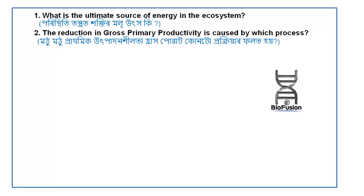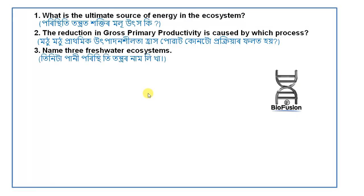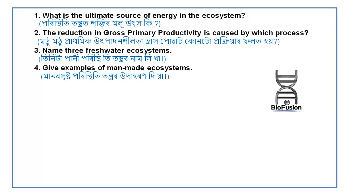The reduction in gross primary productivity is caused by which process? Name three freshwater ecosystems. Give examples of man-made ecosystems.